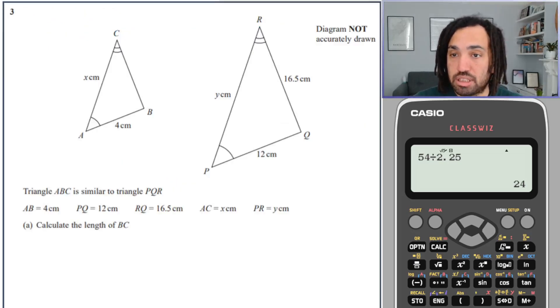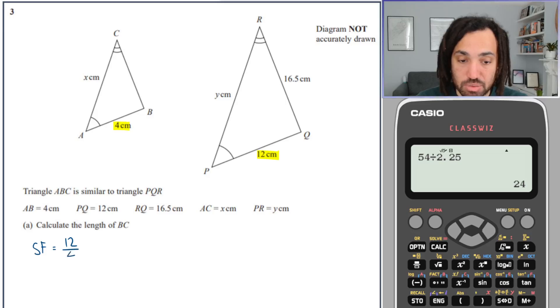Next question, again we've got two similar triangles. It says calculate the length of BC. Well the first thing I'm going to do is find the two corresponding sides. The two corresponding sides that we know are 12 and 4. So the scale factor will be the larger one divided by the smaller one, which gives me a scale factor of 3.